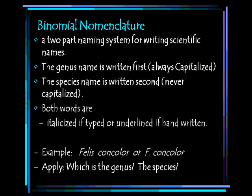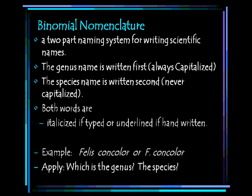We use a method called binomial nomenclature — a two-part naming system used for writing scientific names. The genus of the organism is always written first and is always capitalized. The second word is the species, and it is never capitalized. Both words are italicized if typed, or underlined if handwritten, because you can't italicize your handwriting. The example given here is the name for that mountain lion, cougar, puma: Puma concolor. The genus can be abbreviated if you use the same scientific name repeatedly, but you wouldn't want to abbreviate it the first time you use it in an article. The genus is capitalized and the species is lowercase.